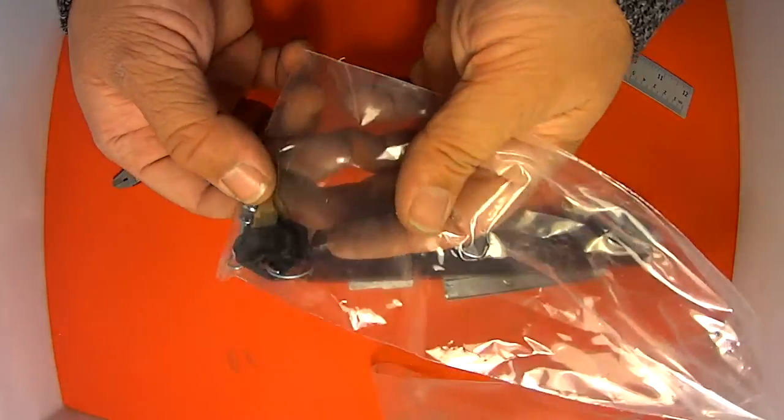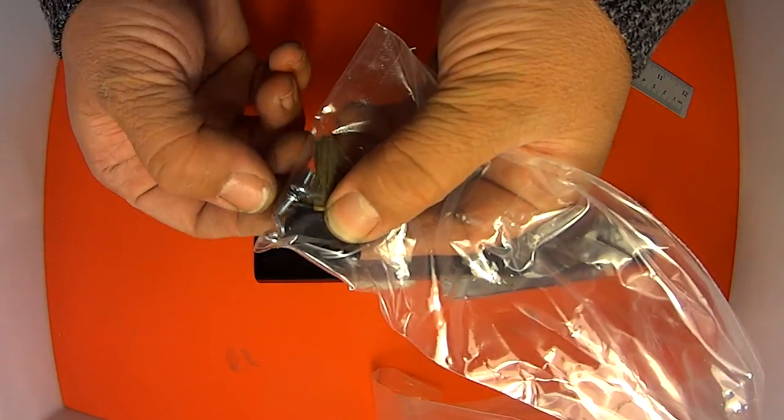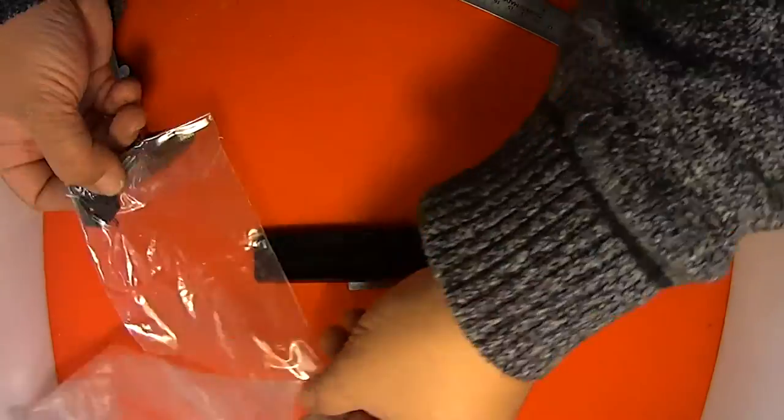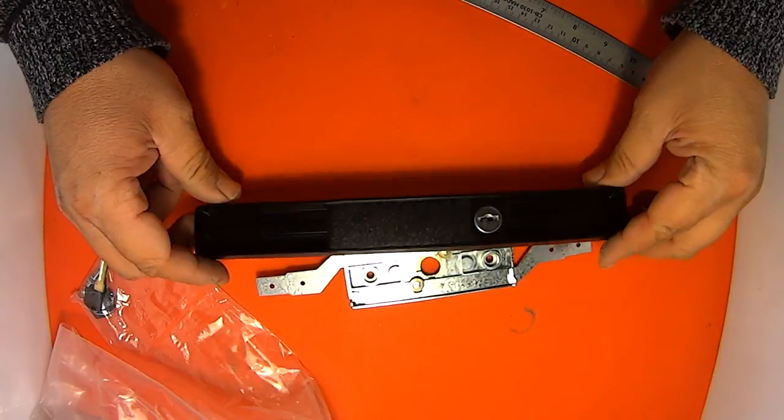Okay, so in here we have the keys, two screws, and two small washers. And the lock itself.